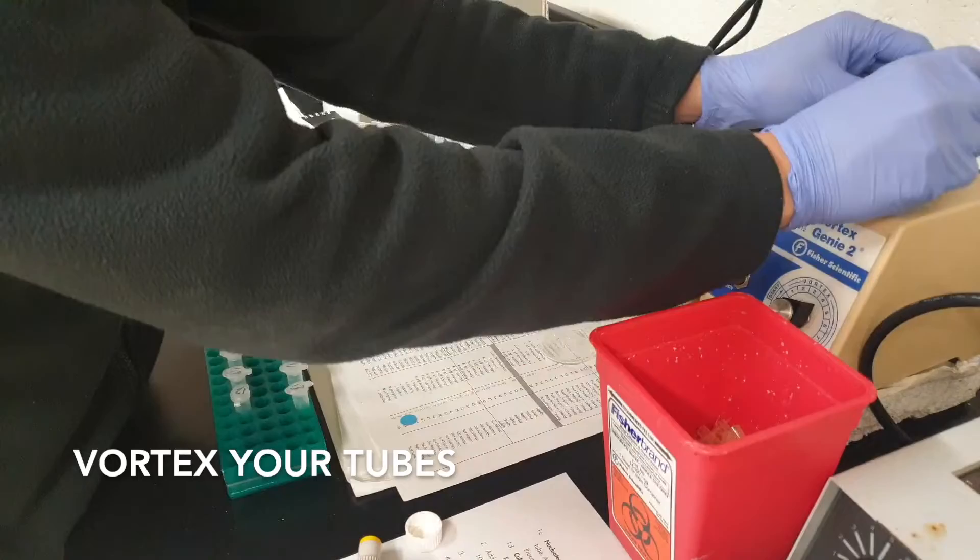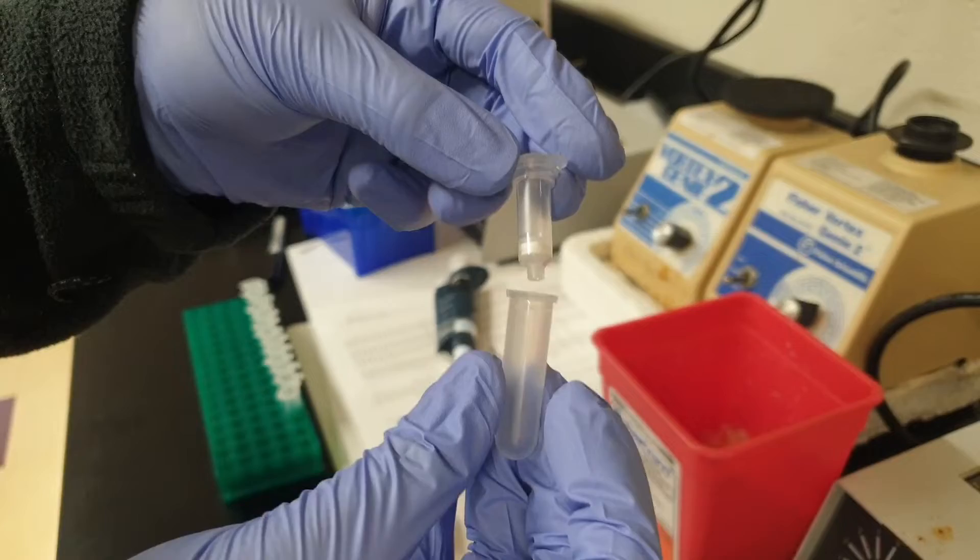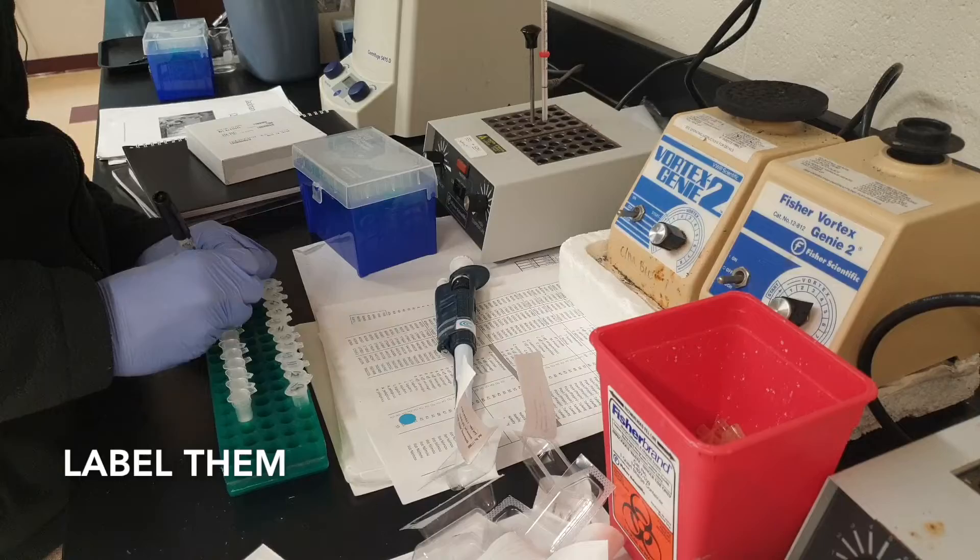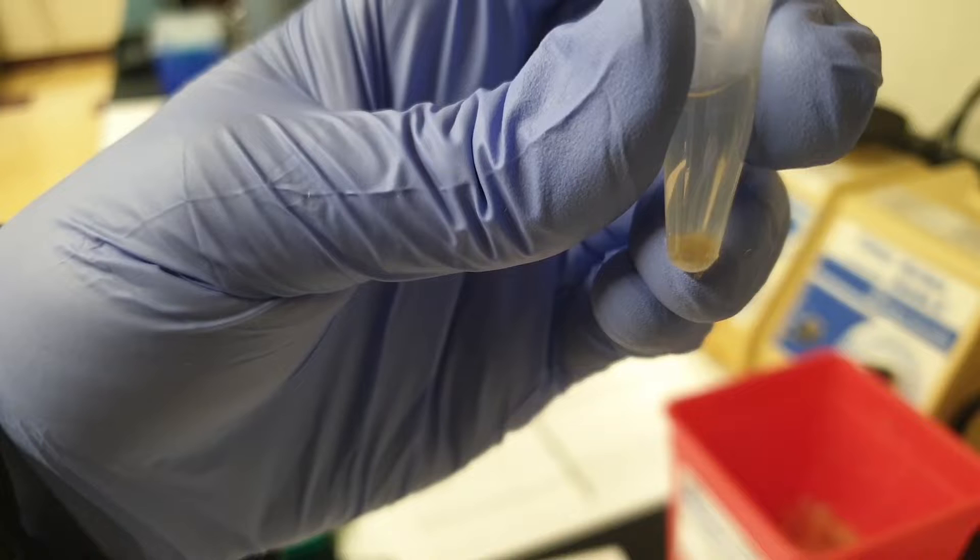Vortex it, then grab your spin column tubes and label them. Transfer all 600 microliters of solution that's in the 1.5 ml tubes into the spin column tubes that you just opened from the kit you received.